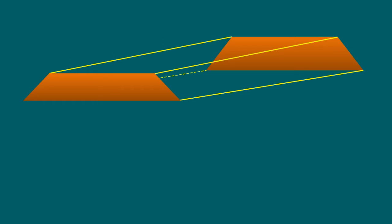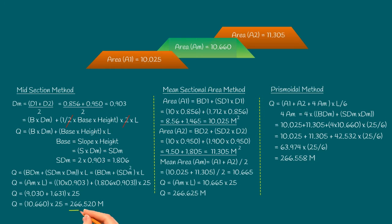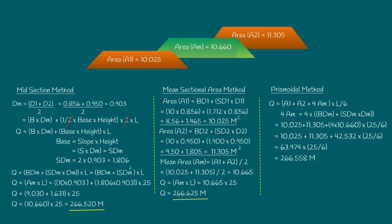However, here we will see the types of methods adopted which are commonly used in university exams and in public service exams. Those are: 1. Midsection method, 2. Mean sectional area method, 3. Prismoidal method. We will see about these three types in detail. The value calculated in midsection method gives the lower value. The value calculated in mean sectional area method gives the higher value. And the value calculated in prismoidal method is the middle of these two methods.